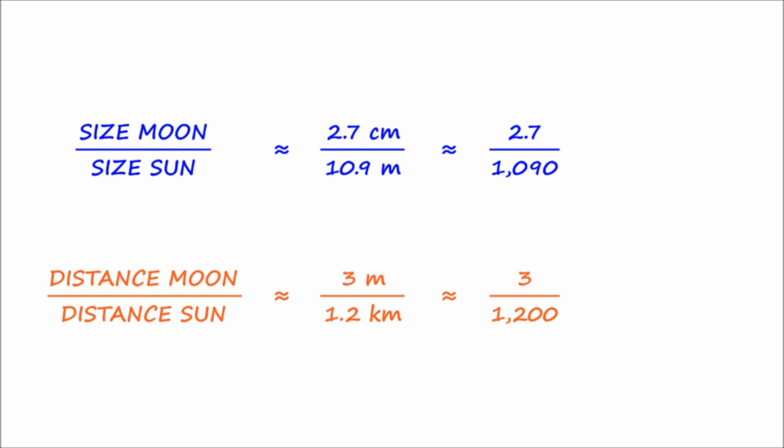The Sun is four hundred times bigger than the Moon. It's also four hundred times further away. This means that when we see them in the sky, the Moon and the Sun appear to be exactly the same size.